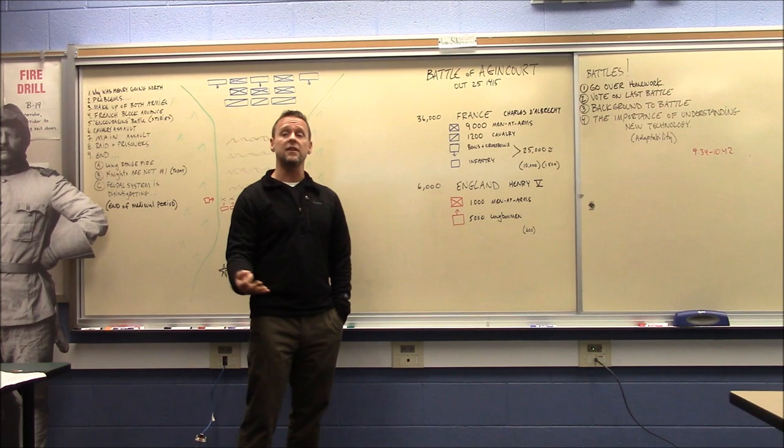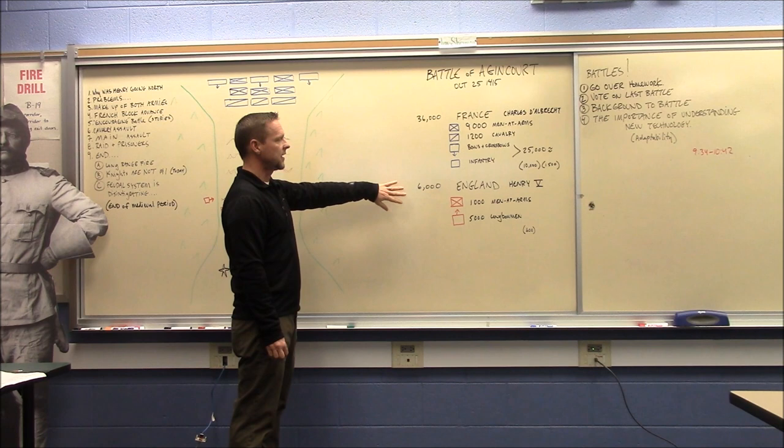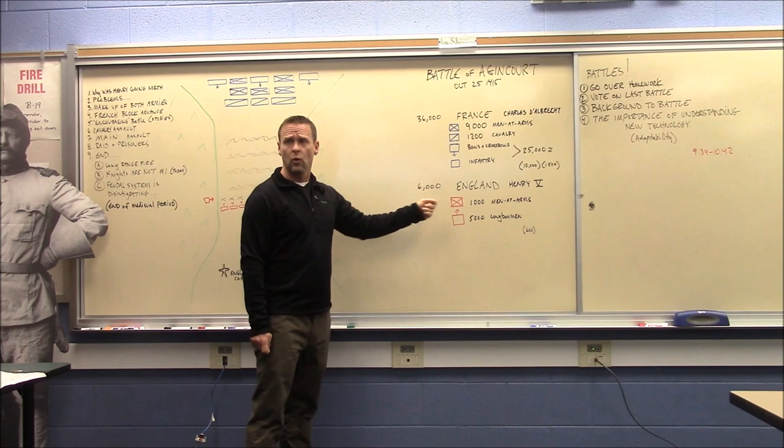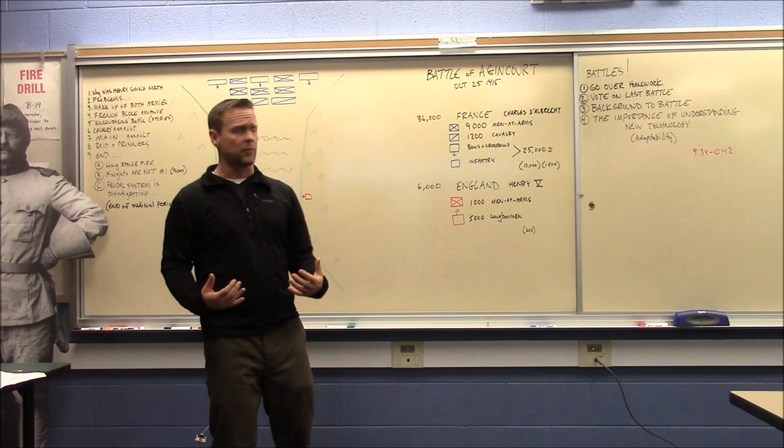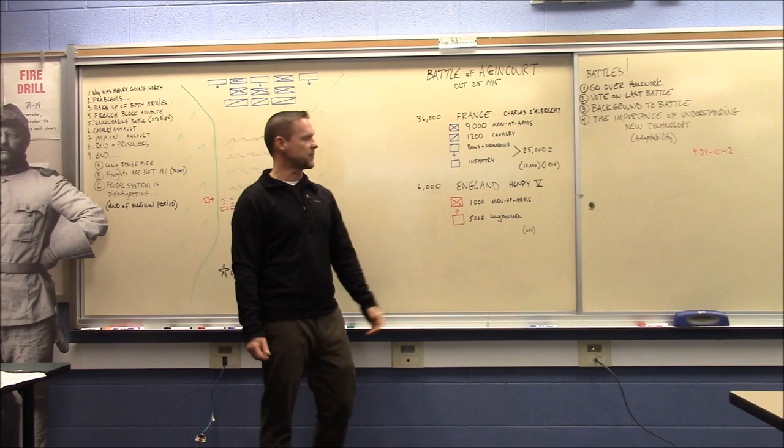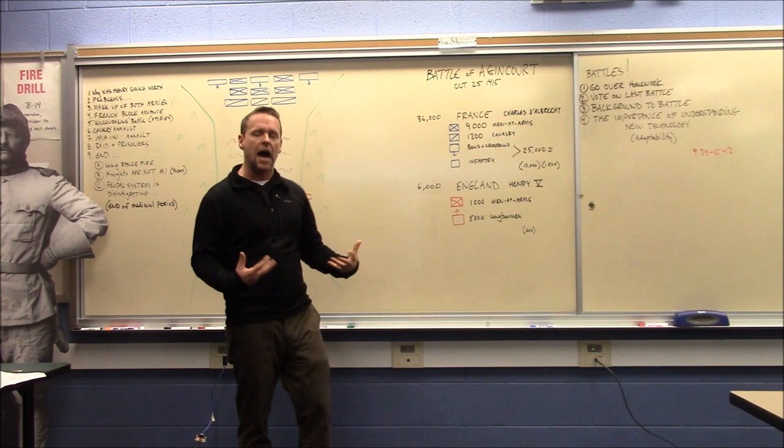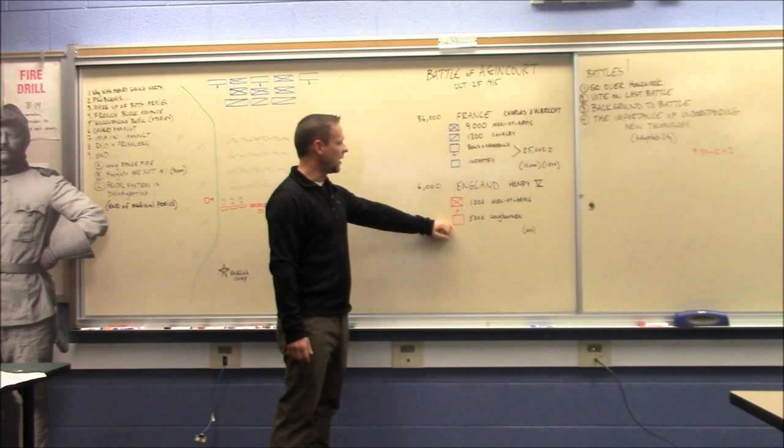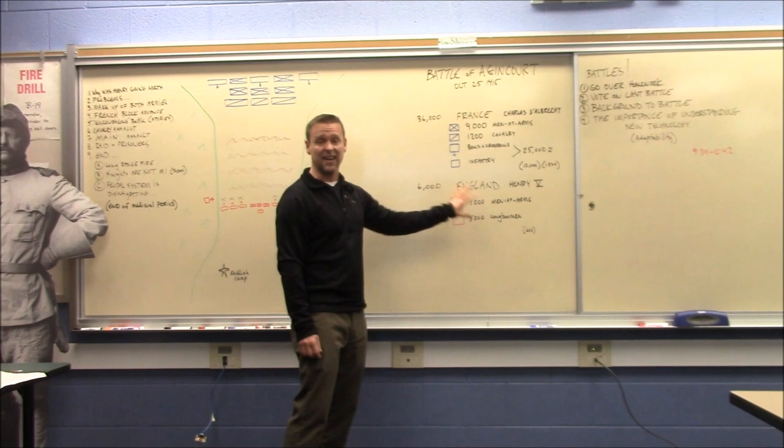Up against 6,000 English under Henry V, of which 1,000 of them were your men-at-arms or the dismounted knights, still heavily armored. But there's only 1,000 of them versus 9,000 men-at-arms that are equal, and then a whole bunch of other just general infantry. So the numbers are pretty scary. However, the English do have the new technology, the longbow. And there are about 5,000 longbowmen.